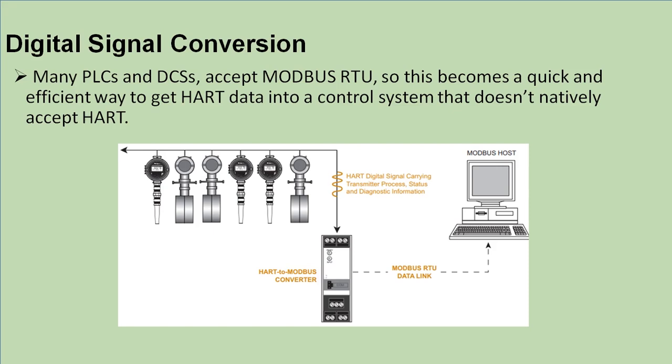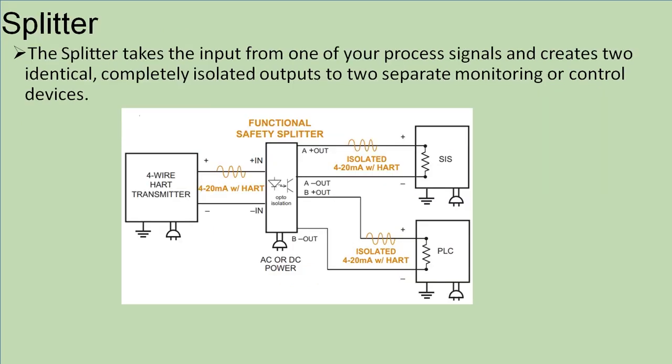For signal splitting, there are applications that require multiple outputs. For example, the process signal coming from the transmitter at 4-20 milliampere is to be fed to a PLC for basic process control and also to a safety instrumented system. If the basic process control system does not reduce the risk, the safety instrument system will come into picture. If the application requires two outputs, the signal isolator splits the signal to two different outputs.